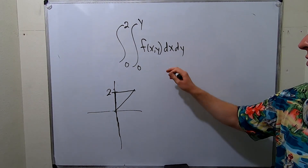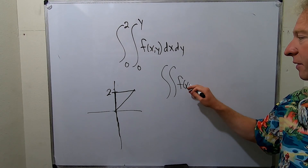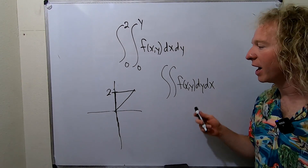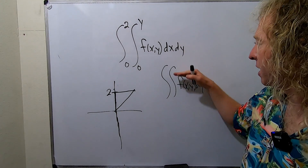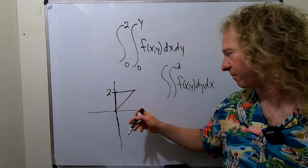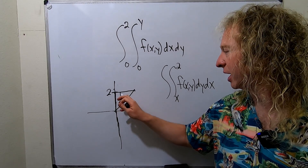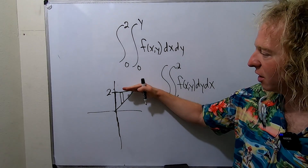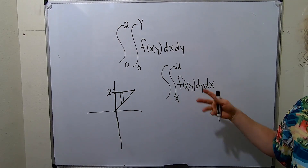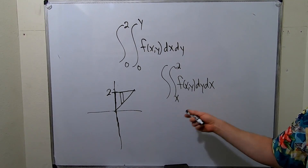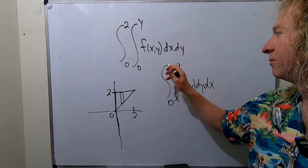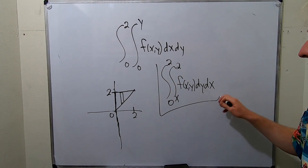Now we want to switch the limits. So we have f of x, y, and now we have dy dx. To switch the limits, first we're doing y, so we have to think about y — it's top minus bottom. We're going from y equals x on the bottom to y equals 2 on the top. You can think of a rectangle: the height is 2 minus x, so y goes from x to 2. Then for our x values, we're going from 0 to 2, left to right. And that would be the final answer.